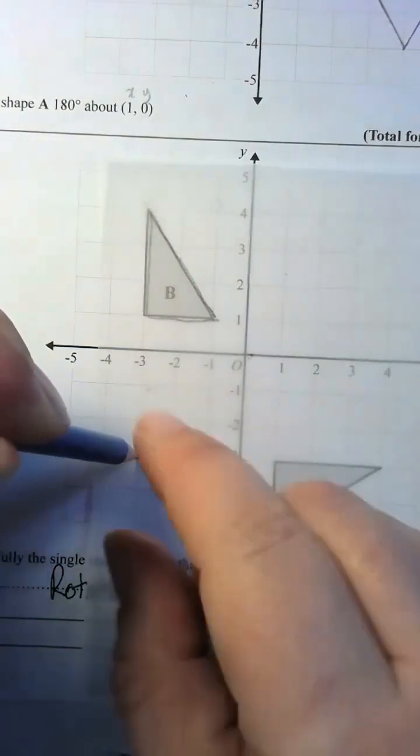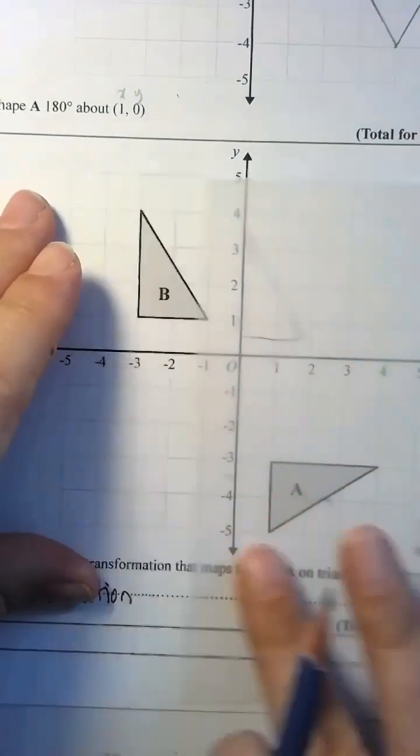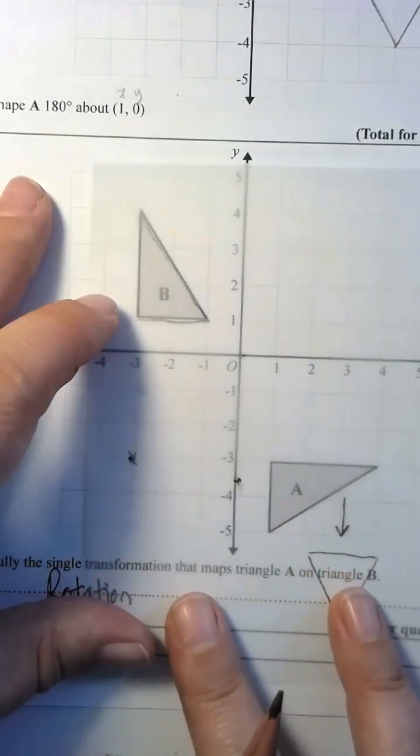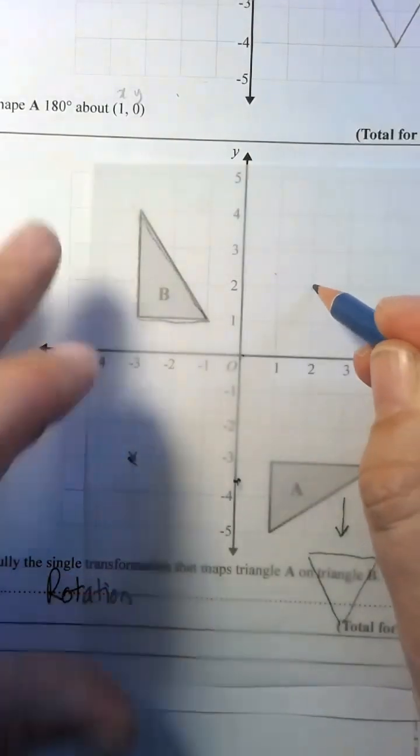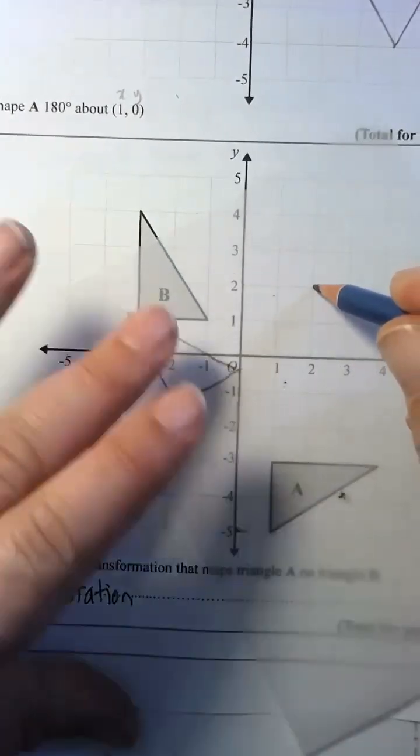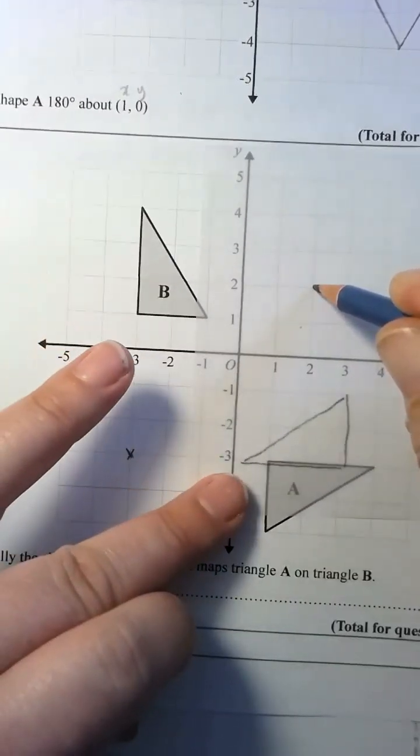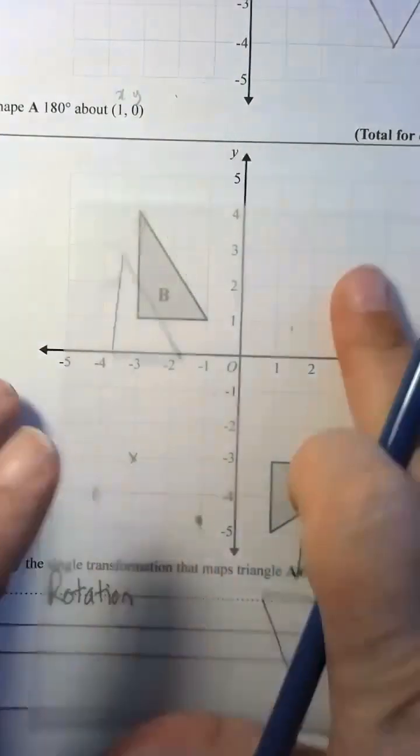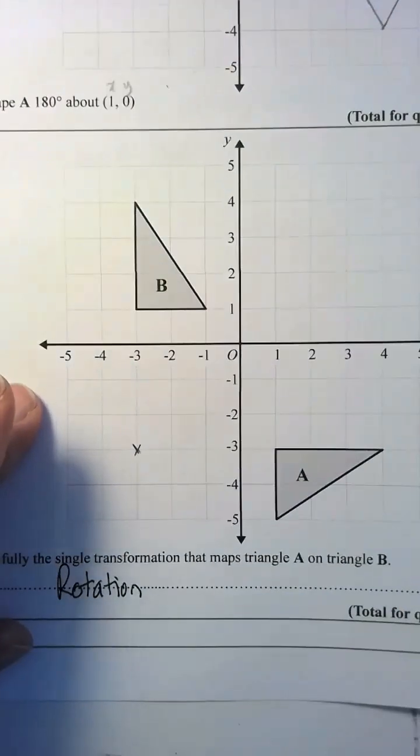Now, it may take you several attempts. What you might have done - I'm just going to mark the center of rotation here first. Okay. So what you might have done is tried something up here, maybe. And you can see when it comes around, it's just a very different shape. It's a very different orientation. Same shape, still congruent, but a different orientation. All right. So now I've got my center of rotation, so I need to write it.